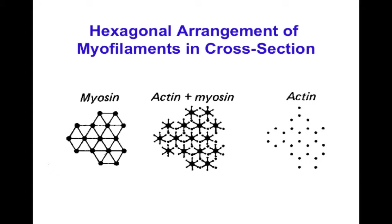Actin and myosin thick and thin filaments are arranged in a hexagonal arrangement. In the A-band region where thick and thin filaments overlap, each thick filament is surrounded by six thin filaments. The thick filaments put out crossbridge heads in pairs 180 degrees apart, with each pair rotated 120 degrees from the previous one along the filament length, so that after a full 360-degree rotation, three pairs make six crossbridges that can form junctions with the six neighboring actin thin filaments.